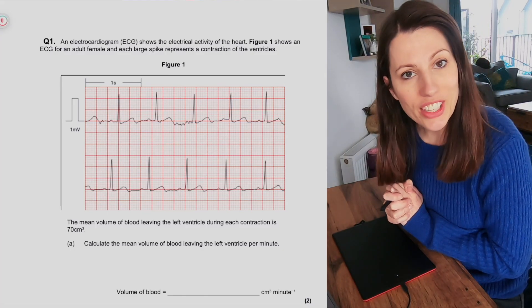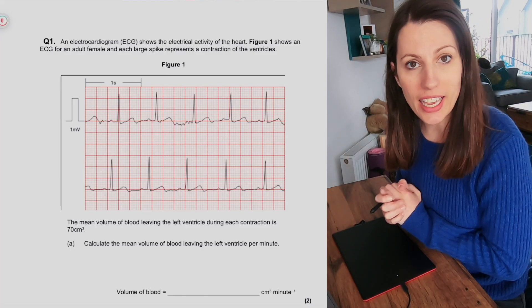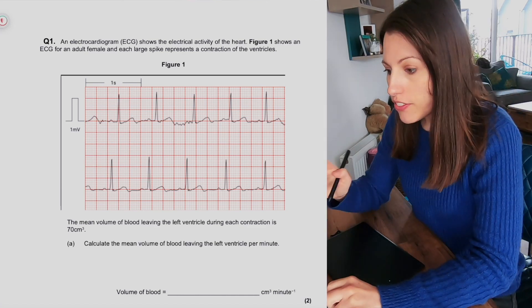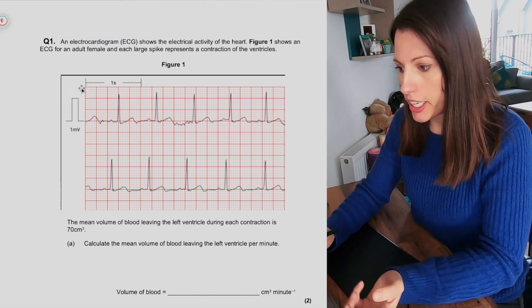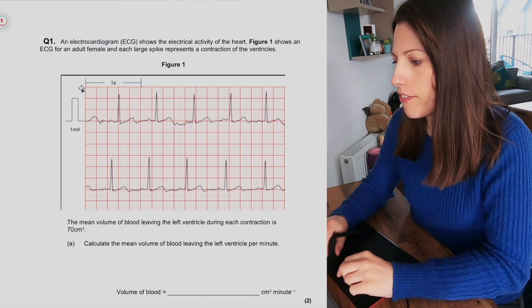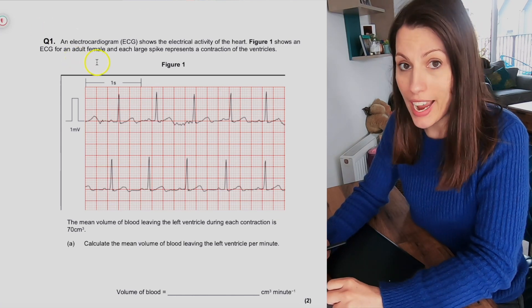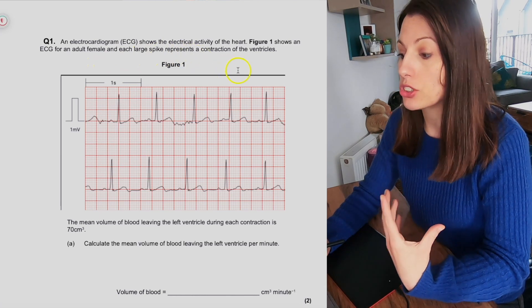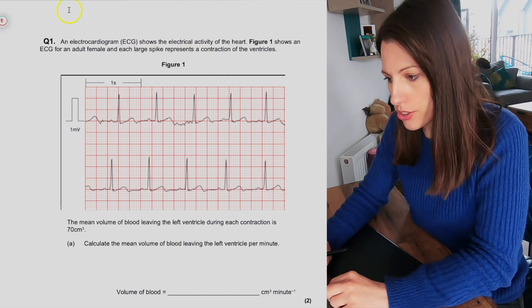Okay, so let's have a go at the exam questions then. I'm going to type them or write them as we go through. So for the first one we've got an electrocardiogram or ECG shows the electrical activity of the heart. Figure 1 shows an ECG for an adult female, and each spike represents a contraction of the ventricles.